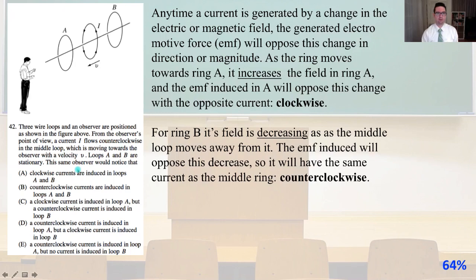Number 42. Three wire loops and an observer are positioned as shown in the figure above. From the observer's point of view, a current I flows counterclockwise in the middle loop, which is moving towards the observer with a velocity v. Loops A and B are stationary. This same observer would notice that...